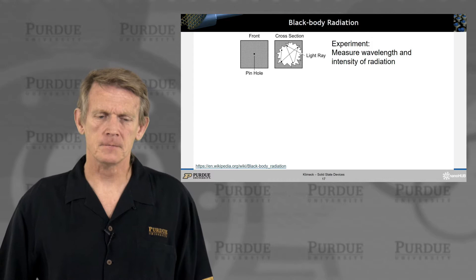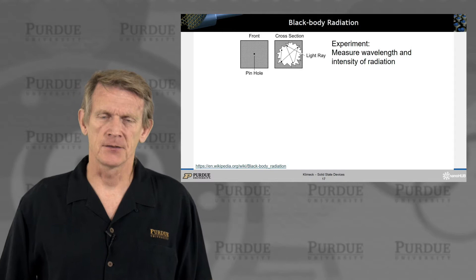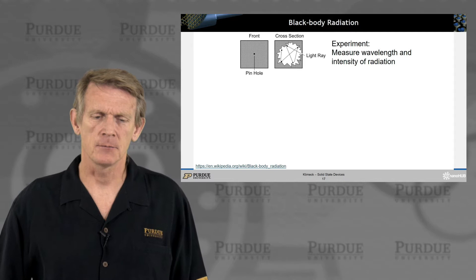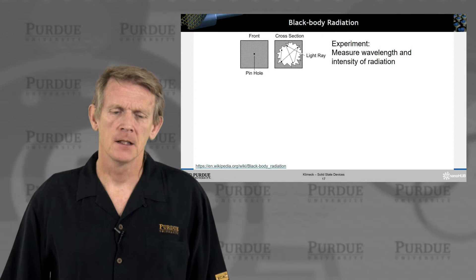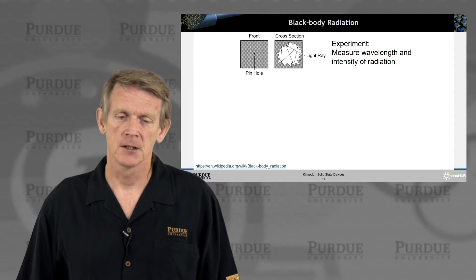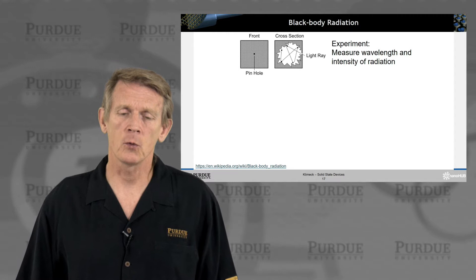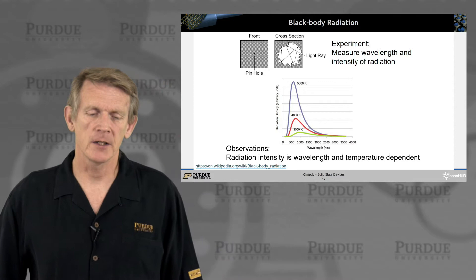And they defined something called a black body which is an opaque object where it's black. It has maybe a hole, a pinhole out of which radiation emerged or an object that might be far away which you observe. And in this fictitious black box or in the physical black box you assume that there's some radiation on the inside and you measure what comes out.